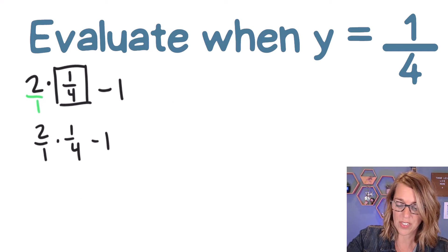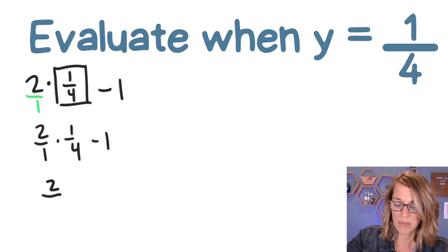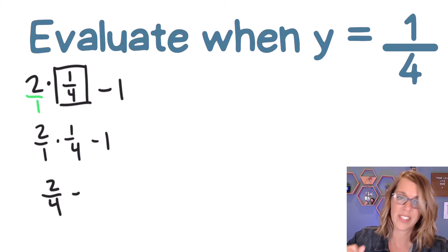Now let's multiply straight across. So I'm going to do the 2 times 1, which is 2, 1 times 4, which is 4. So I get 2/4.